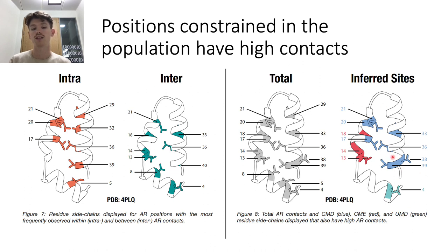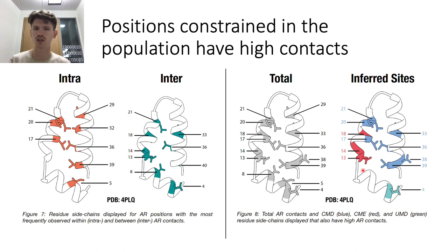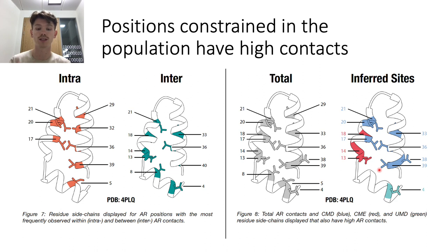In blue, we have conserved positions that are missense depleted, indicating population constraint. This confirms our method — these make up the hydrophobic core running along the full length of the armadillo domain. To supplement them, we have other conserved positions in red that are counter-intuitively enriched for missense variants. When you look at the variants making them up, they are actually conservative mutations, and therefore these positions may continue to evolve with a pool of amino acids with favorable physicochemical properties. Most interestingly, we followed up unconserved position 4, also constrained in the population, which is supported by structural data as having a high contact number. Thus, we learn about this novel site, which may have a key structural role in the armadillo domain.